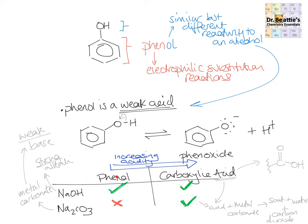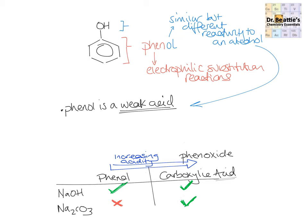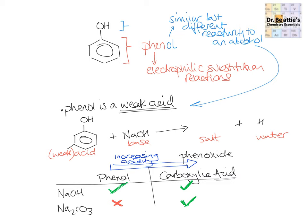Now let's look at the equation for reacting phenol with a strong alkali like sodium hydroxide. Here we have a phenol with a substituted methyl group, but that has no bearing on the reaction. Sodium hydroxide, acting as a base, reacts with this acid — albeit a weak acid — in a mostly irreversible reaction following the pattern: acid plus base gives salt and water. The salt is based on the phenoxide ion, and because we have this negative charge with a sodium cation, the name of this particular salt is sodium phenoxide.